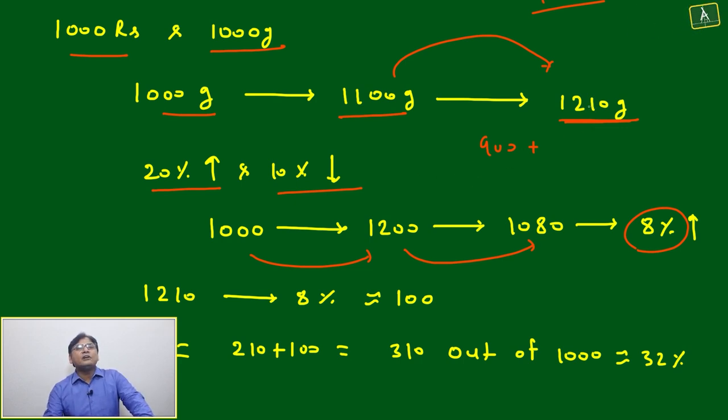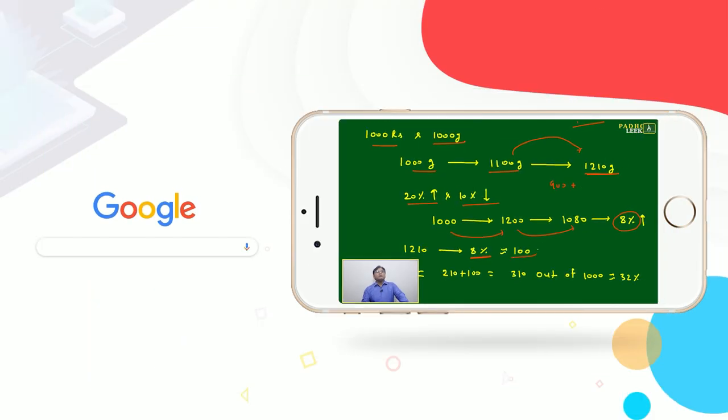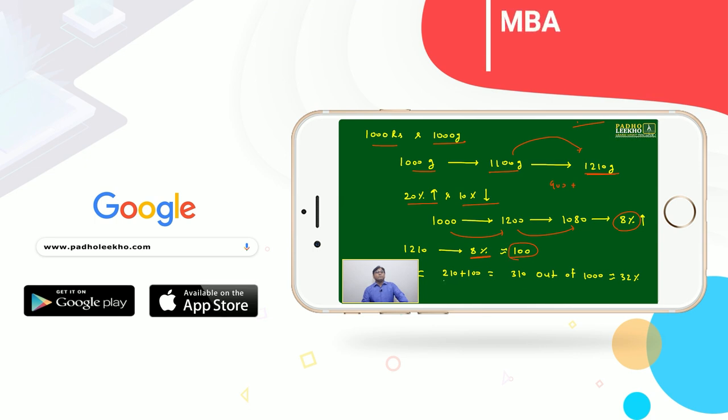Overall you can say here 21% gain, and 8% of 1210 is approximately 100. So 210 rupees gain is here and 100 rupees gain is here - total is 310 rupees out of 1000 rupees, approximately.